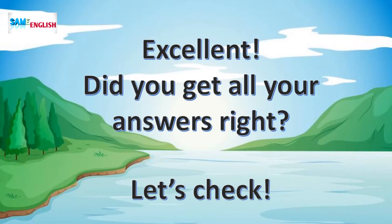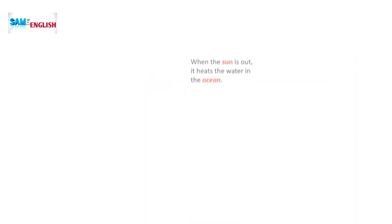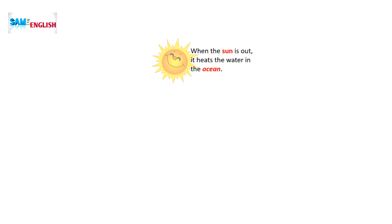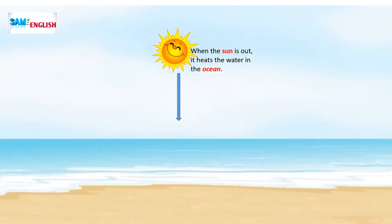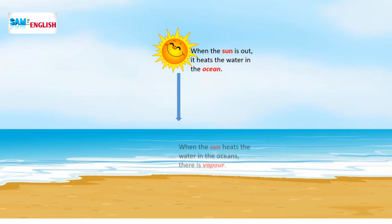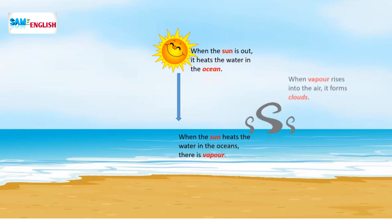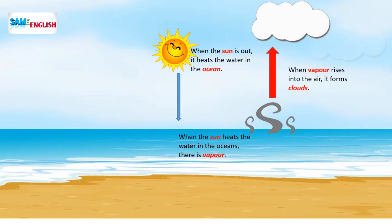Excellent! Did you get all your answers right? Let's check! When the sun is out, it heats the water in the ocean. When the sun heats the water in the oceans, there is vapor. When vapor rises into the air, it forms clouds.